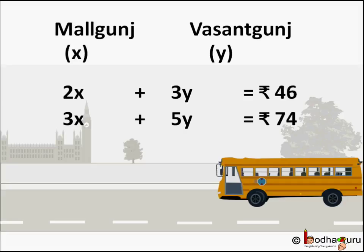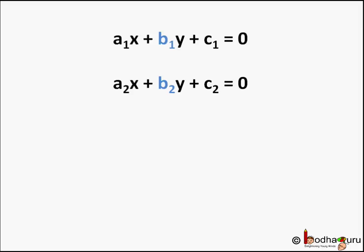But there is a method which allows us to get the value of both variables directly. Let us look at that. Let us first understand how the formula is derived. We have two linear equations of the form A1X plus B1Y plus C1 equal to 0, and A2X plus B2Y plus C2 equal to 0, where A1 and B1 are coefficients of equation 1, and A2 and B2 are coefficients of equation 2. C1 and C2 are constant terms.